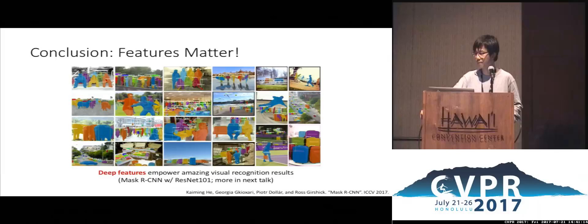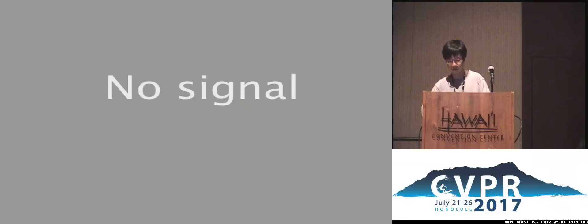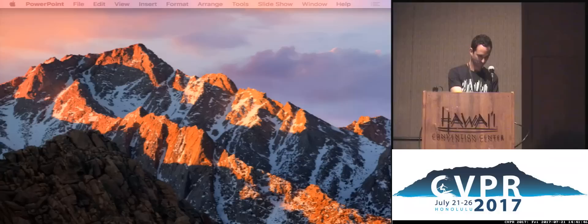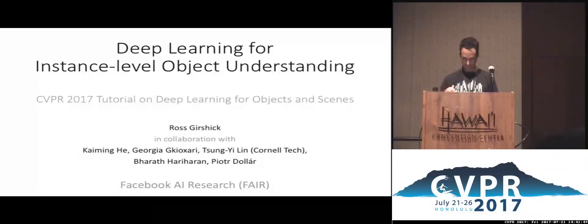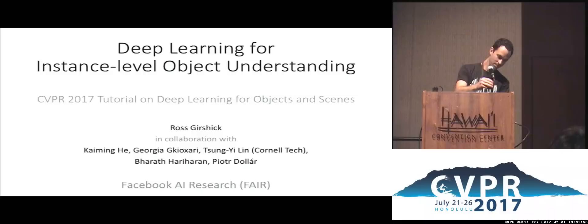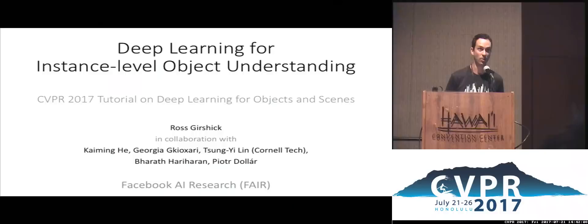The next speaker is Ross Girshick, a research scientist at Facebook AI Research, who has done influential work on object detection — proposing RCNN, involved in Fast RCNN, Faster RCNN, and now Mask RCNN. He will talk about instance-level object detection and understanding. Ross begins: he will apply deep representation knowledge to computer vision tasks such as object detection and instance-level understanding.